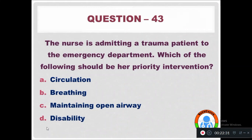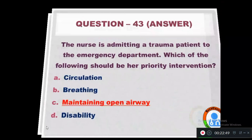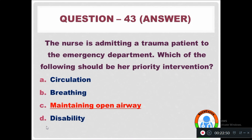Question 43: The nurse is admitting a trauma patient to the emergency department. Which of the following should be the priority intervention? Option A: Circulation. Option B: Breathing. Option C: Maintaining an open airway. Option D: Disability. The right answer is maintaining an open airway — it is the priority nursing intervention.